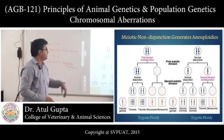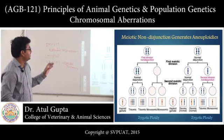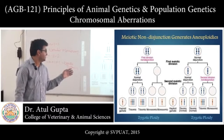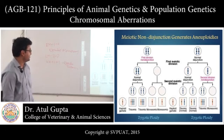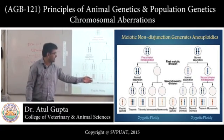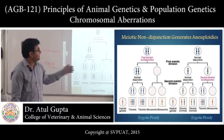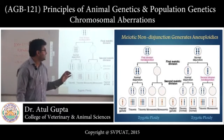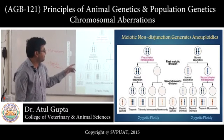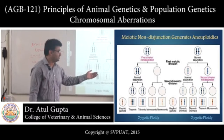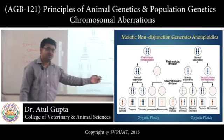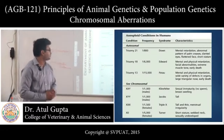The reasons for aneuploid conditions arise from non-disjunction. In first division non-disjunction, a homologous pair goes into one cell while the other cell is empty. When normal disjunction then occurs in these cells, abnormal gametes are produced. Similarly, when non-disjunction occurs in the second division, abnormal gametes result after the second division. When these fuse with normal haploid gametes, trisomic and monosomic conditions appear.